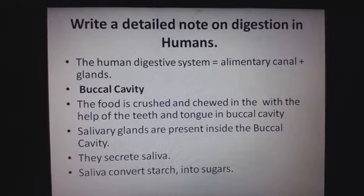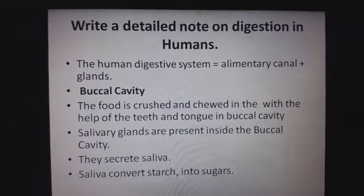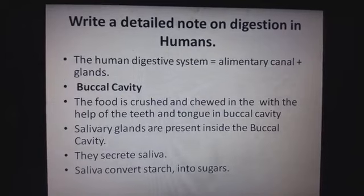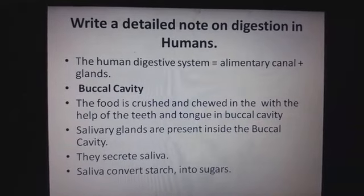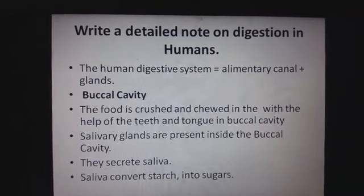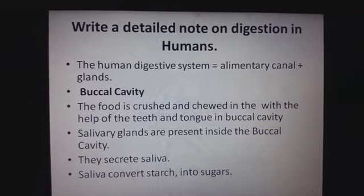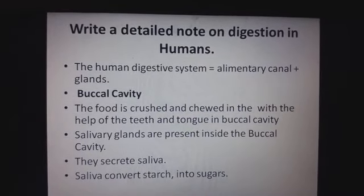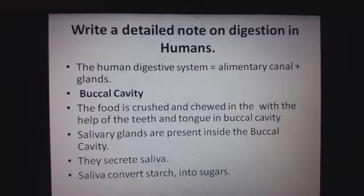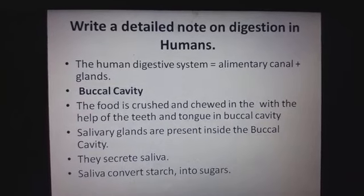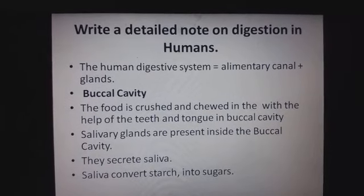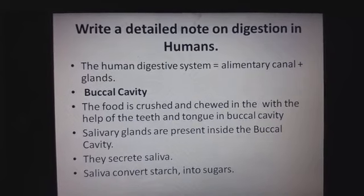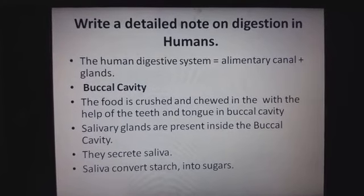Let's see how many parts are involved in the alimentary canal. The first part is the mouth, then the buccal cavity — also called the oral cavity — then the esophagus, which is the food pipe. The food then goes to the stomach, then the small intestine, the large intestine, and finally the waste comes out of the anus.